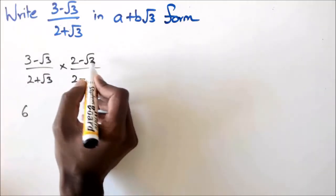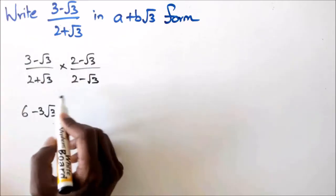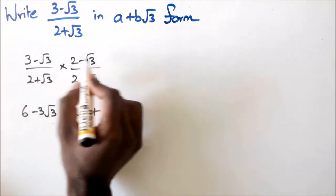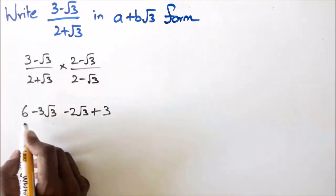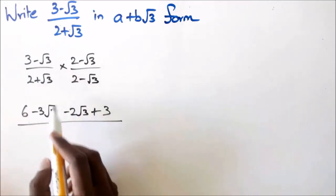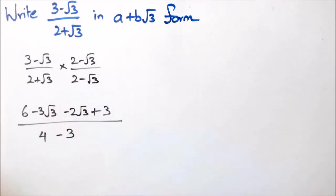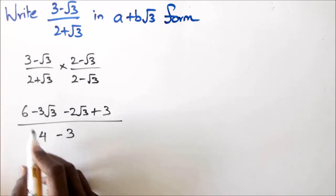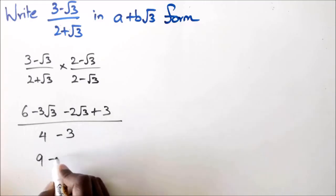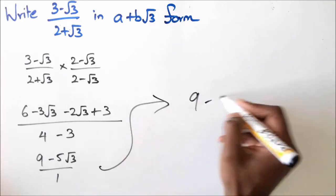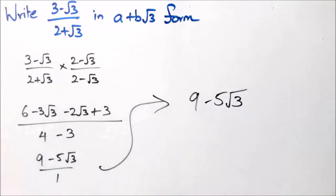Expanding the numerator: 3 times 2 is 6, 3 times minus √3 is negative 3√3, then minus 2√3, and negative times negative gives plus √3 times √3 which is positive 3. In the denominator, using the shortcut: 2² minus (√3)² is 4 minus 3 equals 1. So the numerator simplifies to 6 plus 3 is 9, minus 5√3, divided by 1, giving 9 minus 5√3.